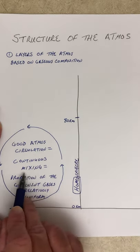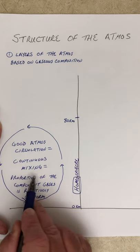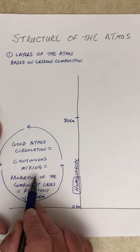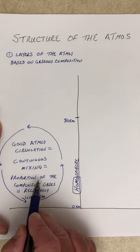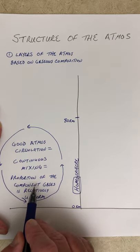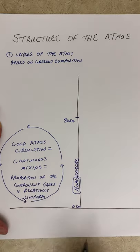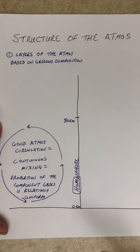If you go to the top of Mount Everest, certainly there's not as much air up there, but the air that is at the top of Mount Everest is still 78% nitrogen, 21% oxygen, and 1% argon. So again, this is the homosphere.